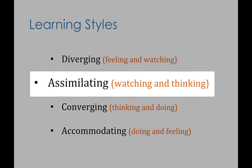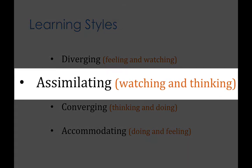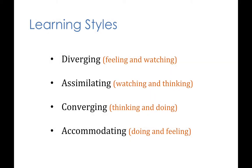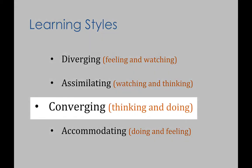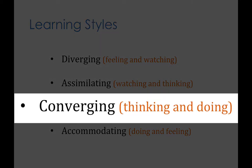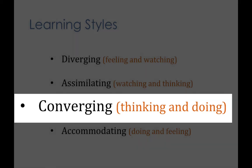The second is the assimilating learning style, which is based on watching and thinking. For people with this learning style, the preferred mode is to take a concise and logical approach. They want a clear explanation and they love ideas and abstractions. The third is the converging learning style, which is based on doing and thinking. People with this learning style prefer technical tasks and love to find practical uses for ideas.